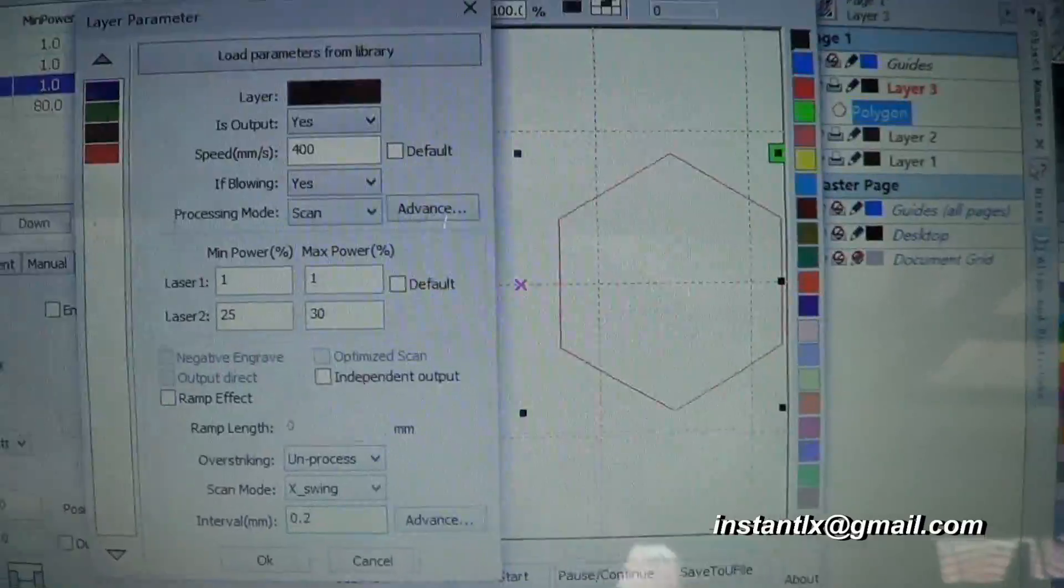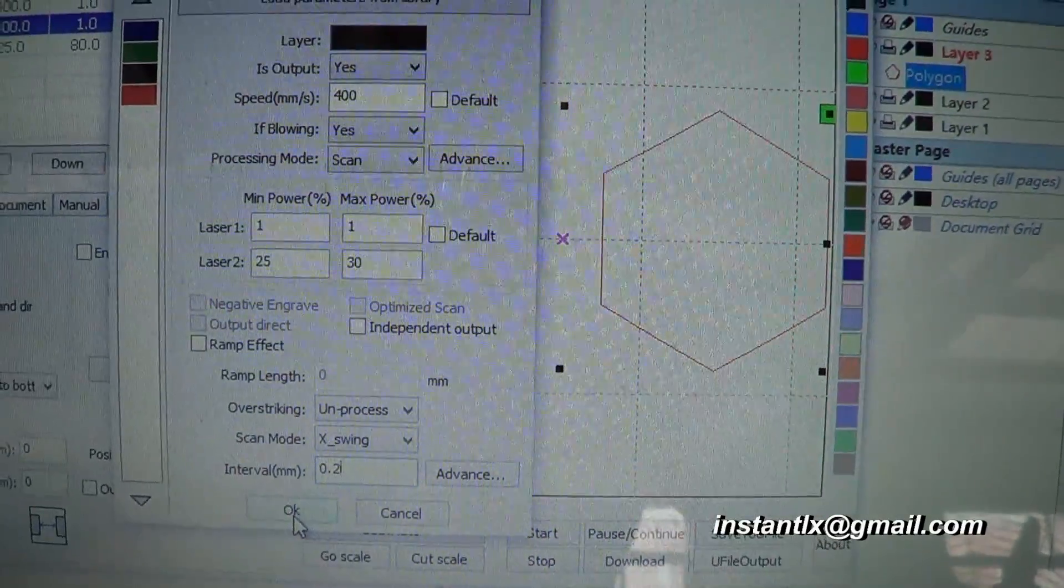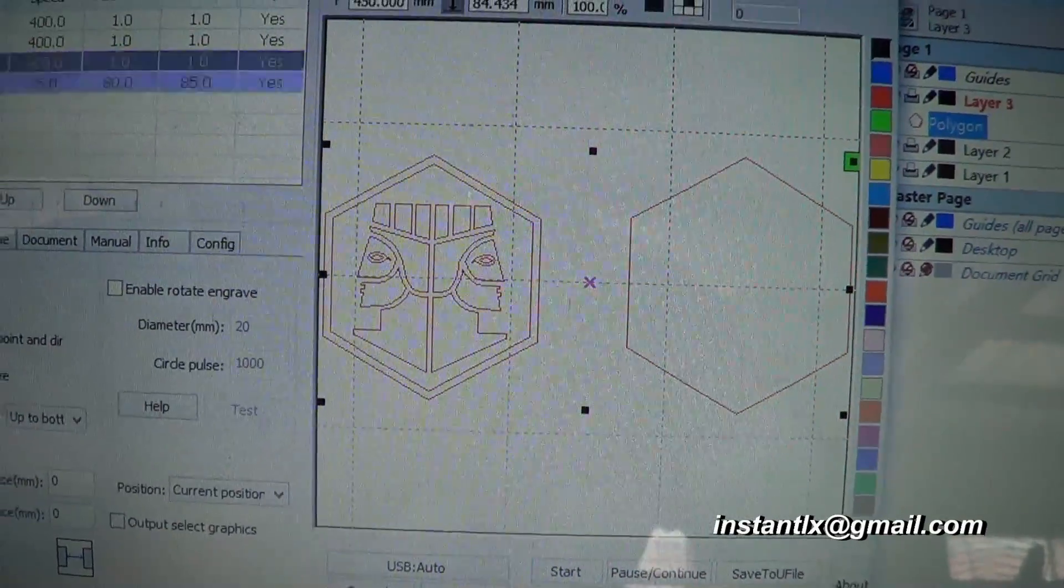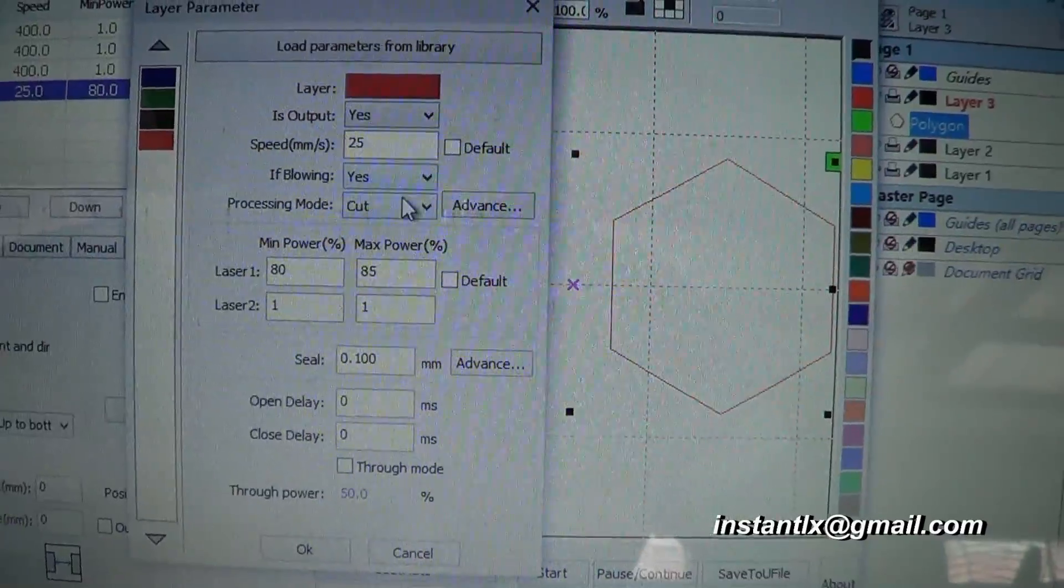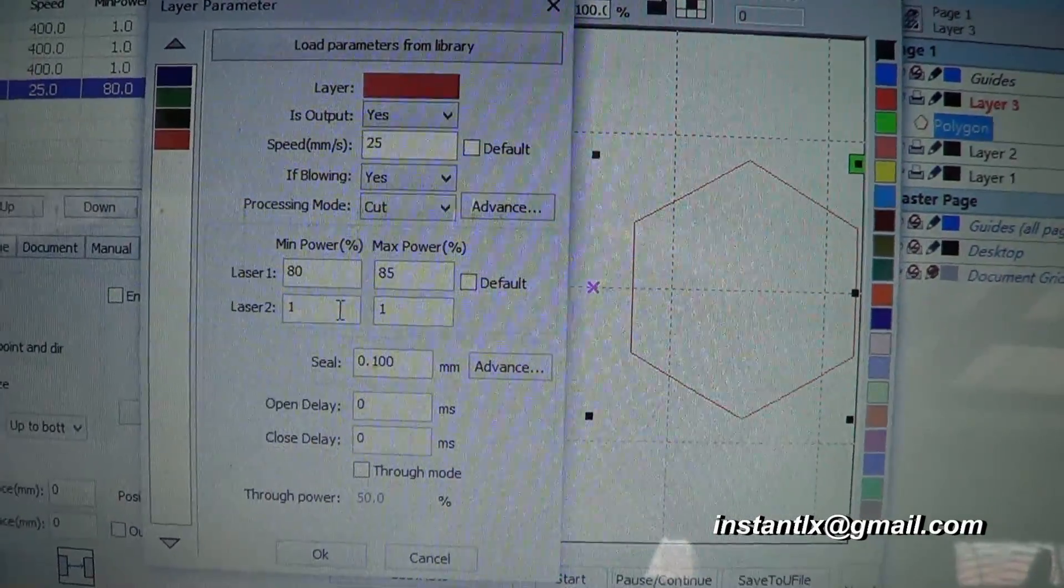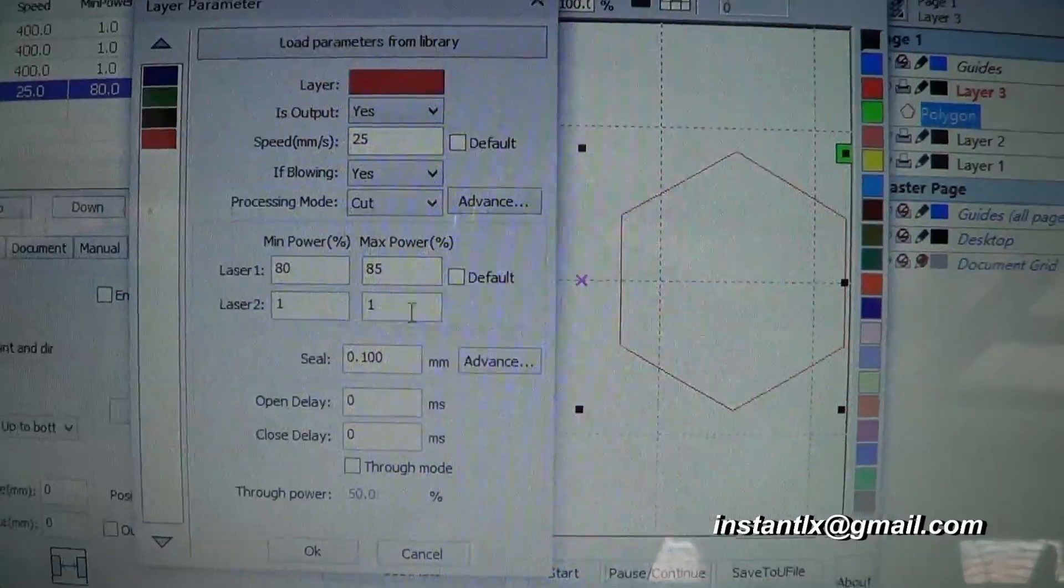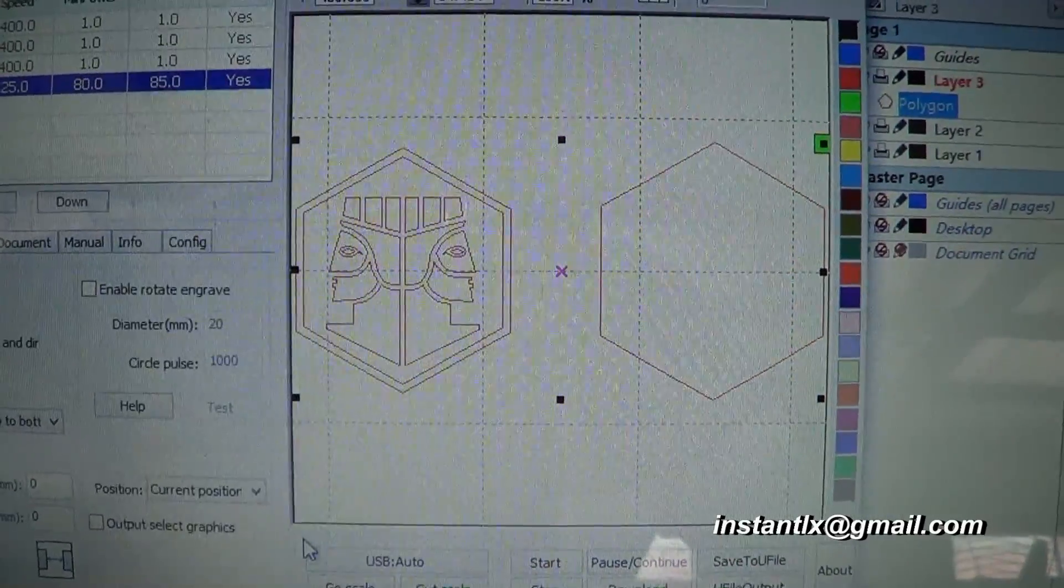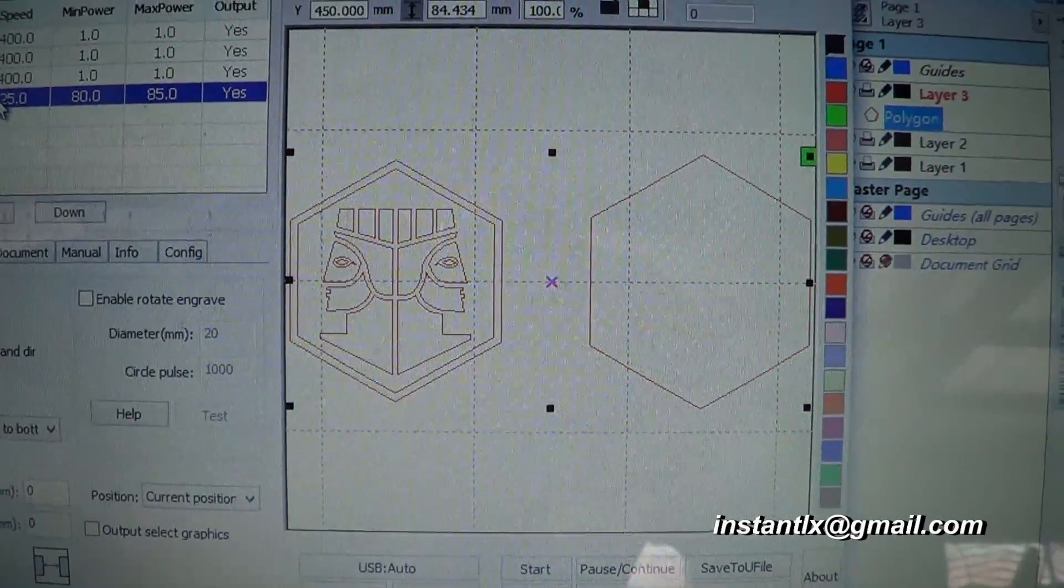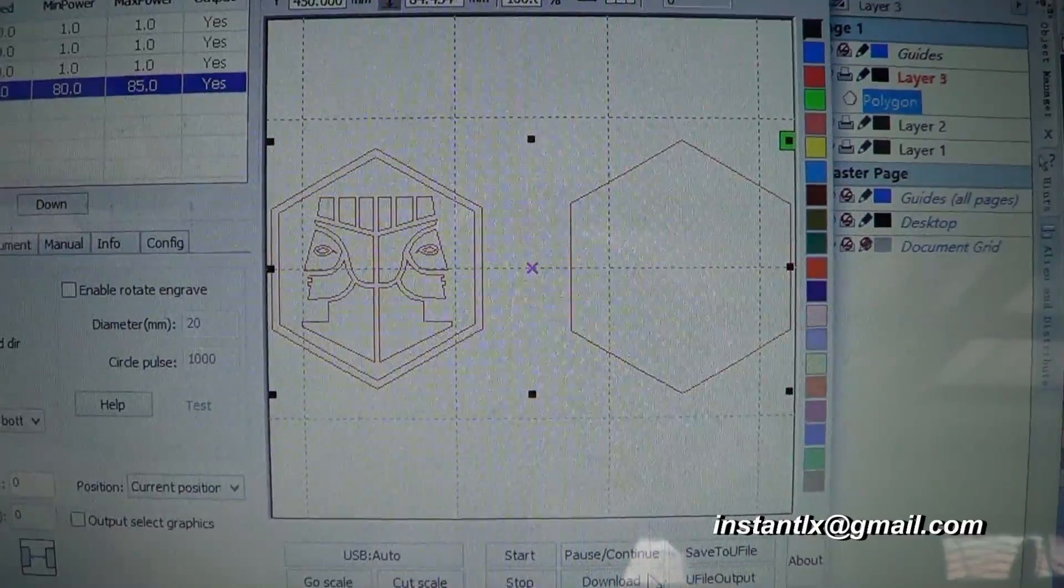I will make it more faster. And for the cutting, here we set the laser 2 to 1%. And we download.